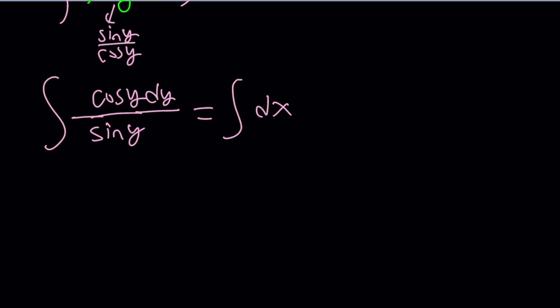U substitution. So let's invoke the power of u. We're going to do a u sub. Now in u subs, it's important to identify u. Usually u is something that can be differentiated, and when we differentiate it, we should be able to see its derivative. So kind of like the function and its derivative showing up together in an integral, or should I say integrand. But in this case, it happens to be sine.